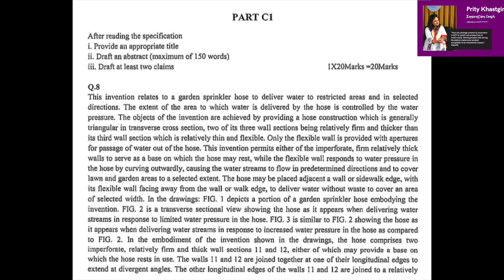The extent of the area to which water is delivered by the hose is controlled by water pressure. The object of the invention — which is very important — is achieved by providing a hose construction which is generally triangular in transverse cross section, two of its three wall sections being relatively firm and thicker than its third wall section, which is relatively thin and flexible.